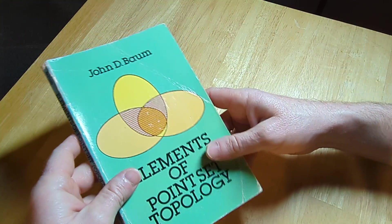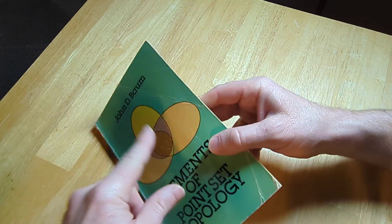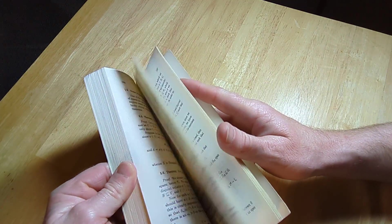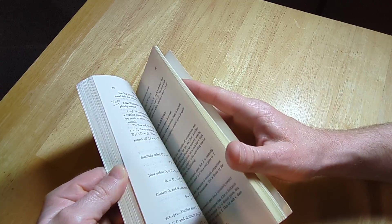It's called Elements of Point Set Topology, and this is the book that I used when I took topology for the first time. It's a pretty good book. I feel like it's very good for beginners.